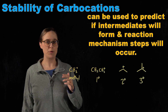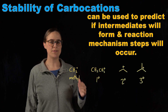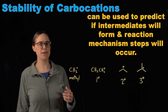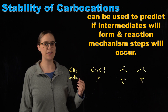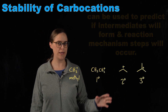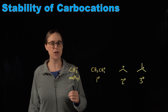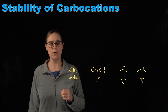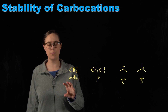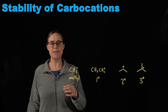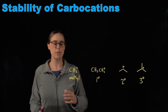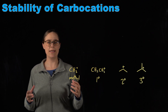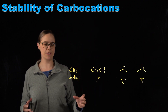In order for you to be able to predict if some of these steps are actually going to occur, you're going to need an understanding of the stability of the products. Carbocations are compounds in which a carbon is bearing a positive charge. That carbon only has a total of three bonds and not four, so it is inherently unstable. But we have different classes of carbocations, and they have different levels of stability.